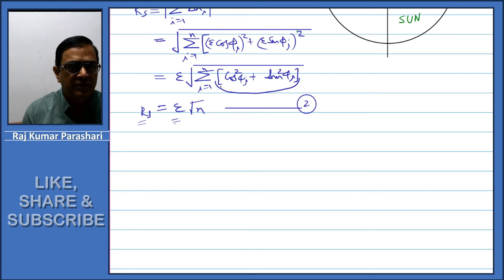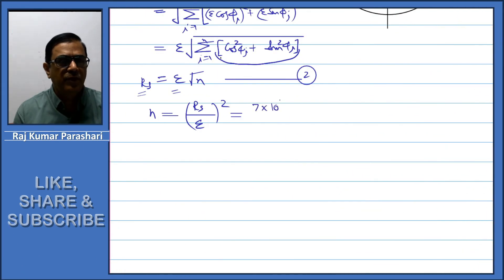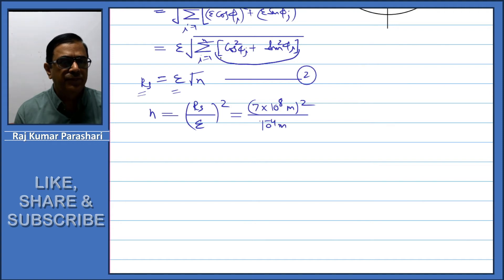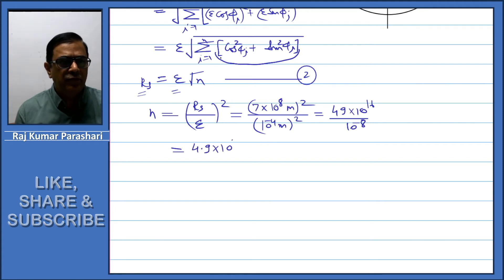Since the values of Rs and ε are given, the total number of interactions or total number of steps for the photon starting from the center and reaching the Sun's surface can be calculated. It is given by n = (Rs/ε)². Substituting the values: Rs = 7×10⁸ meters, ε = 10⁻⁴ meters, giving n = (7×10⁸)²/(10⁻⁴)² = 49×10¹⁶ / 10⁻⁸ = 4.9×10²⁵ steps.